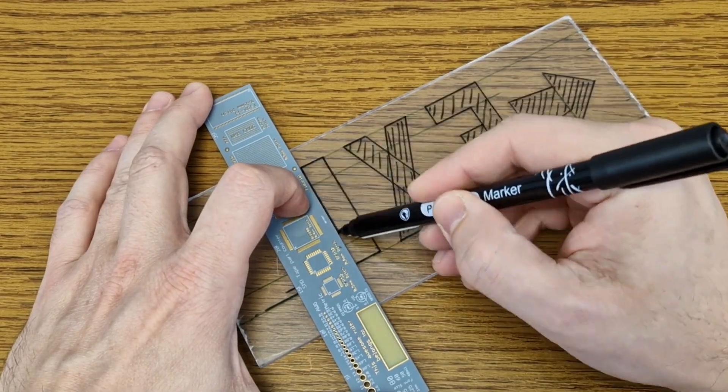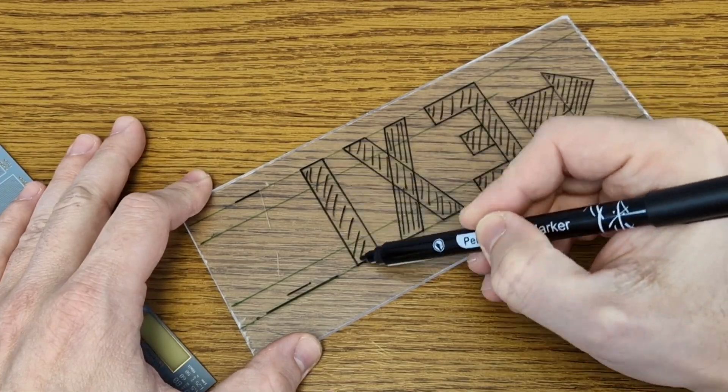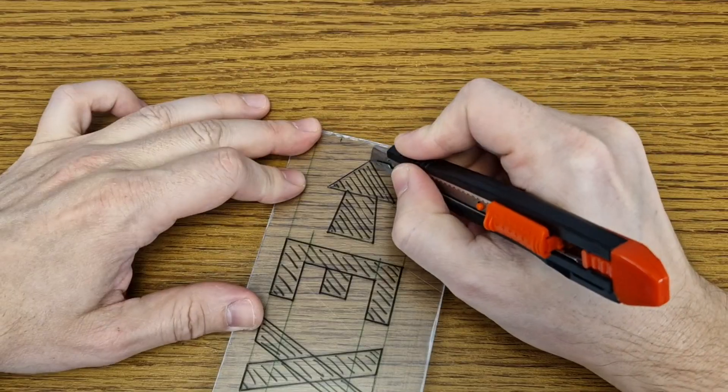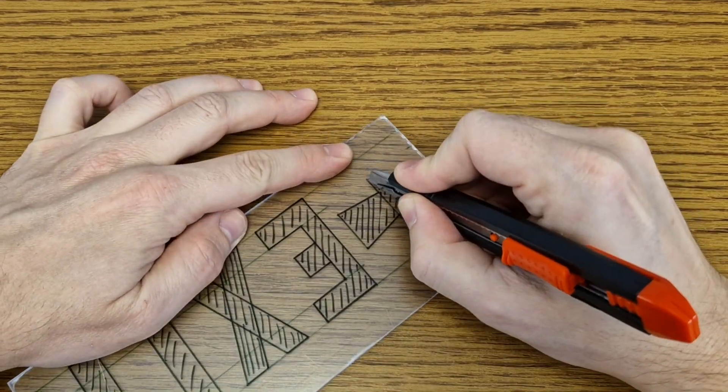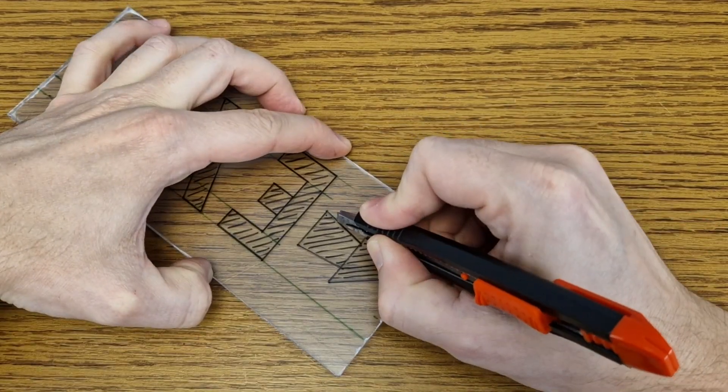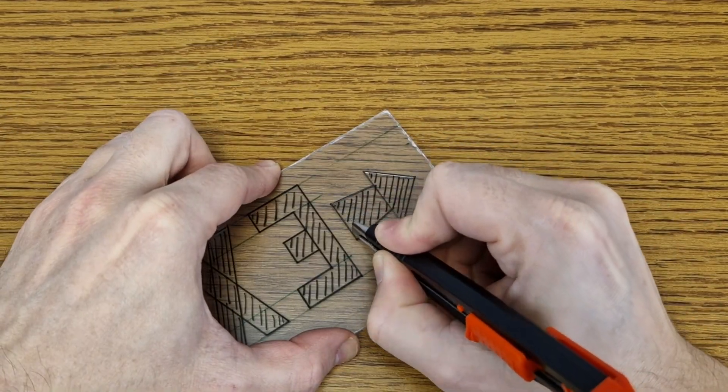The plexiglass has a protective film, so I can write on it. I will make an exit sign first. I will cut the outline of the arrow and the letters using a small cutter. Then I will remove them.